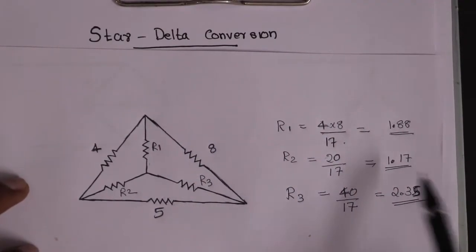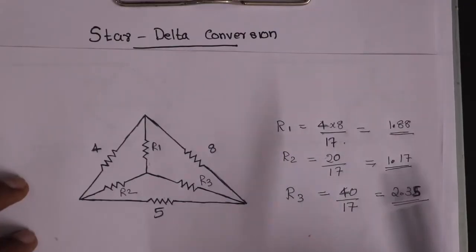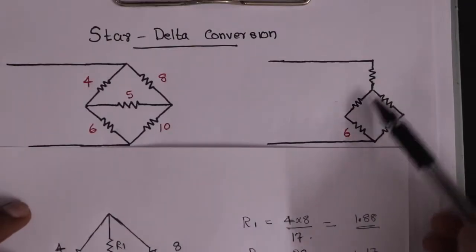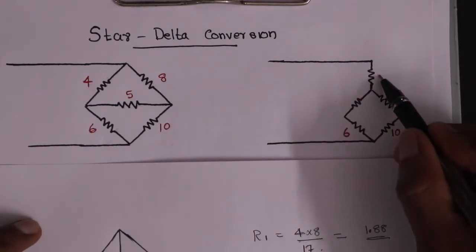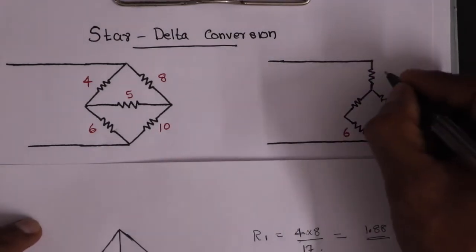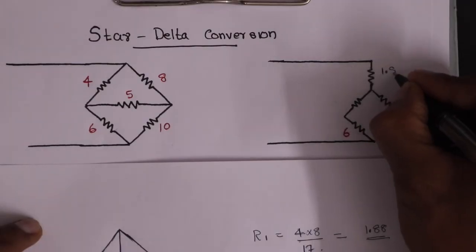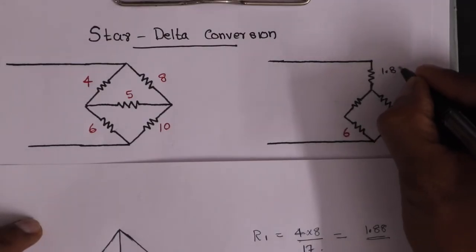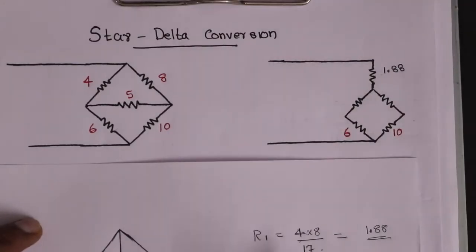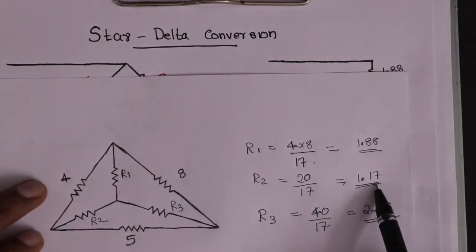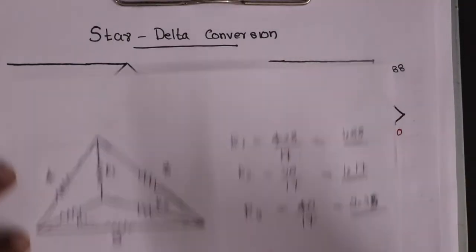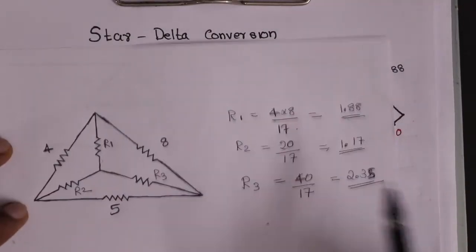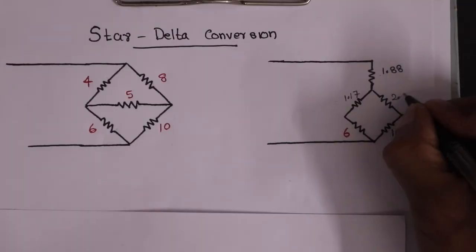We will calculate the value of R1, R2, and R3, and we will apply these three values in this circuit. R1 is the top resistor — this value is 1.8. R2 is 1.17. R3 is 2.35.